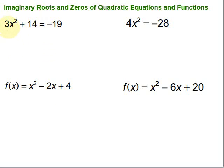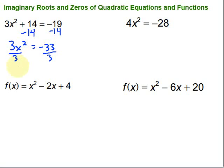The only thing we have in terms of a variable is x squared, so we can just follow the traditional way of solving an equation and get that x by itself using inverse operations. Here we have plus 14 — we'll get rid of that by subtracting 14 on both sides. Then on this side I have 3x squared equals negative 19 minus 14, which is negative 33. Then I can divide by 3 to get that x by itself, giving us x squared equals negative 11.